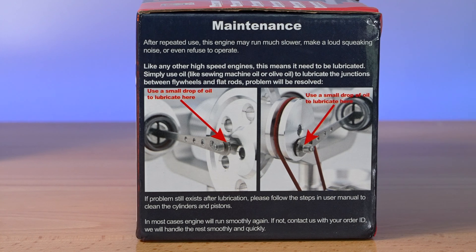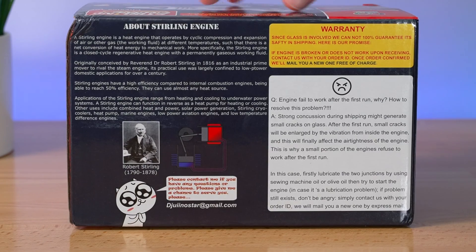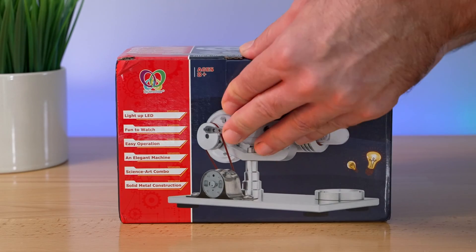So on one of the sides here, we got a little bit more information about it. Some maintenance here, lubricating the moving parts. And on the back here, it kind of tells us the history of the Stirling engine. Let's go ahead and open it up.